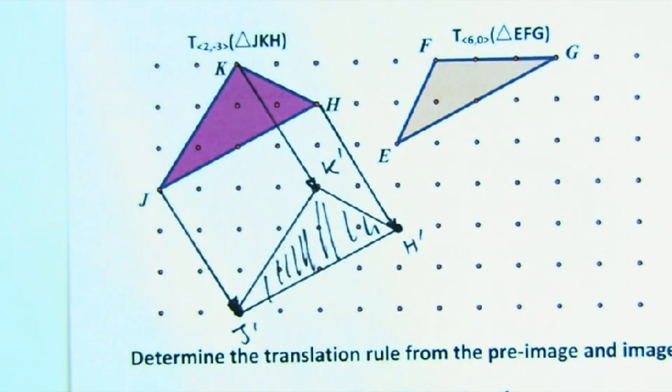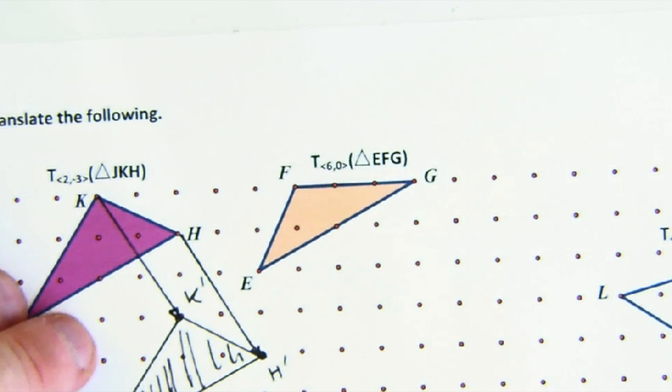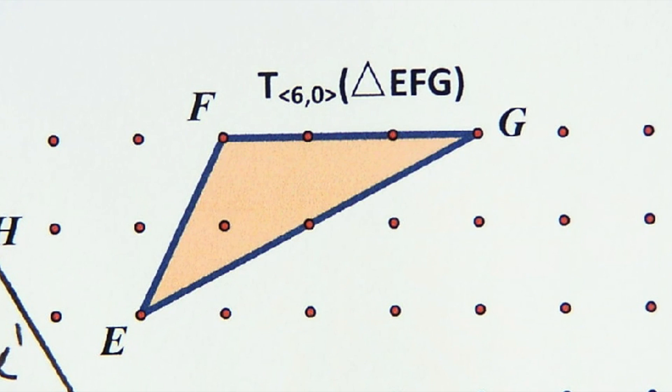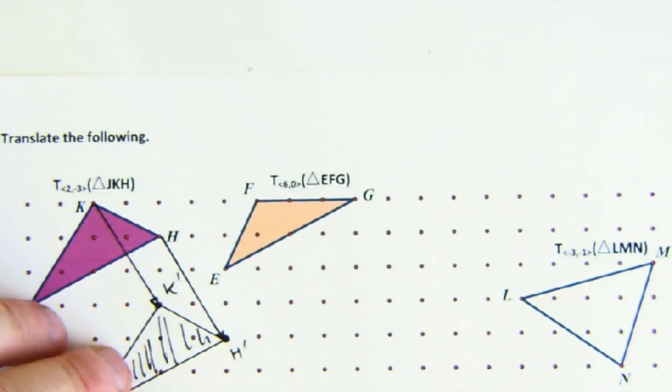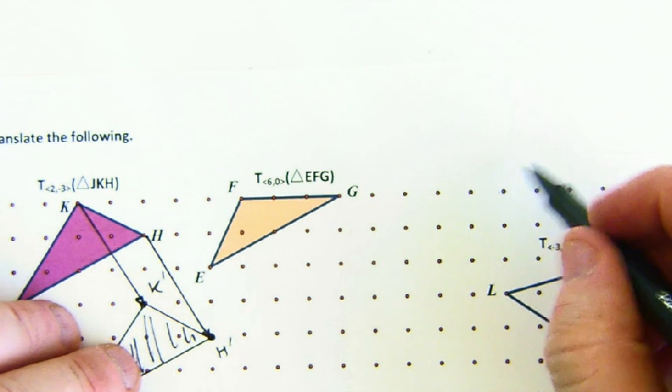j prime, k prime, n prime. In this case, it says, again, the notation is small here, so zoom in. It says translate everything 6 to the right and 0 down or up. So this just moves everybody 6, 1, 2, 3, 4, 5, 6.